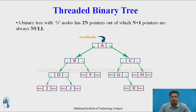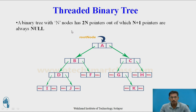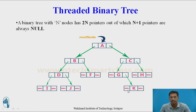In a binary tree with n nodes, there are 2n pointers, out of which n+1 pointers are always null. This example contains ten nodes. For ten nodes, a binary tree has 2n pointers — for each node there are two pointers, one for storing left child and one for storing right child. So for ten nodes there are twenty pointers total, out of which n+1 — that is eleven — pointers are always null. So eleven pointers are null. This is a disadvantage of binary tree.